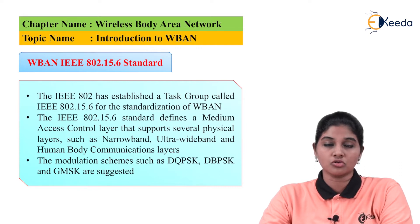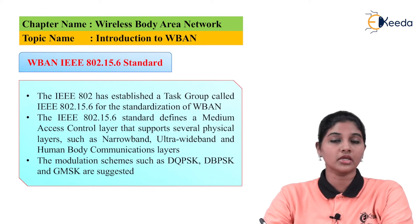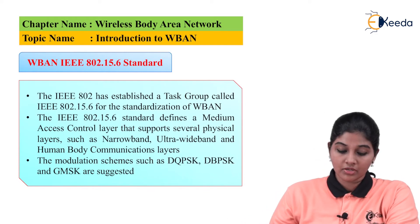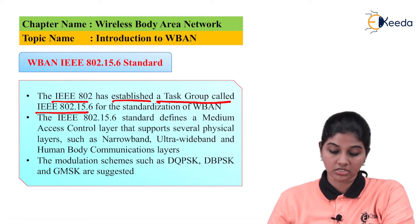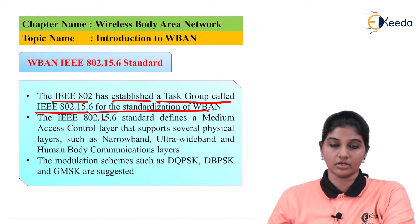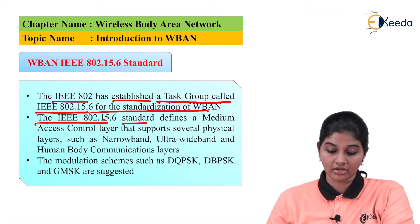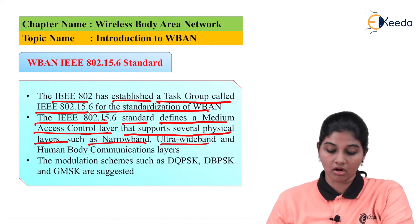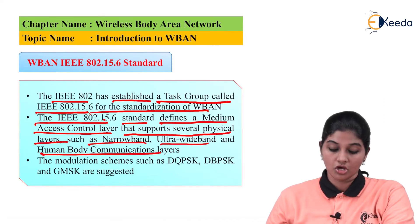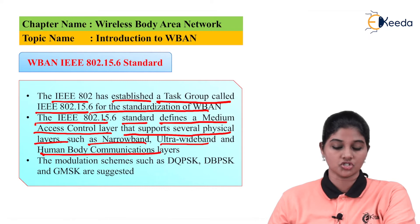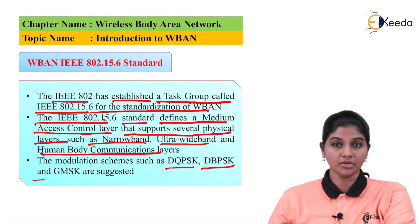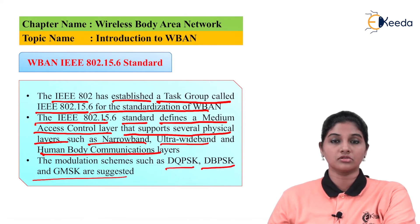In case of body area network also, IEEE defines a standard called IEEE 802.16. The IEEE 802 has established a task group called IEEE 802.15.6 for standardization of wireless body area network. The IEEE 802.15.6 standard defines a medium access control layer that supports several physical layers such as narrow band, ultra wide band, and human body communication layer. The MAC layer, network layer, and physical layer all play an important role in communication.